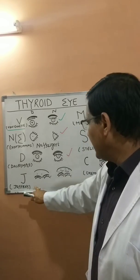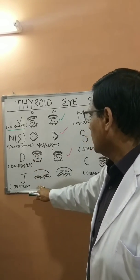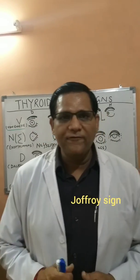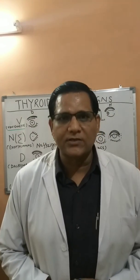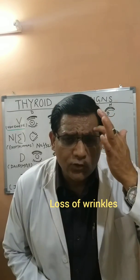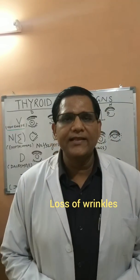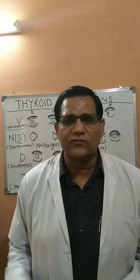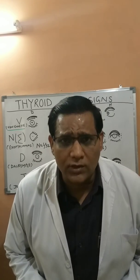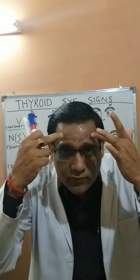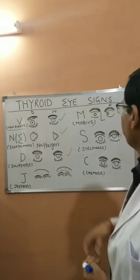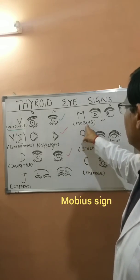The fourth sign is Joffroy's sign. If you ask a normal person to raise their forehead, you will find wrinkles. But in thyrotoxic cases, there is loss of wrinkles over the forehead — the wrinkles won't be there. This sign is called Joffroy's sign.